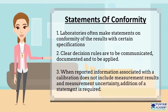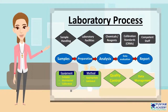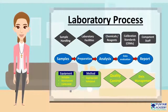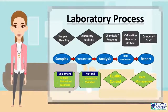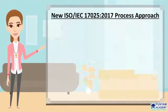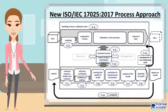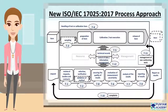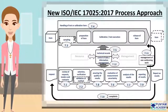Now let's move on to the last topic of this video: laboratory process and the new process approach in ISO IEC 17025. This is a schematic representation of the laboratory process according to ISO IEC 17025-2017. The five stages of a laboratory process include samples, preparation, analysis, data review, and report. You should remember this diagram for reference in the future. This is also a schematic representation of the operational processes of a laboratory according to Clause 7 of ISO IEC 17025-2017.